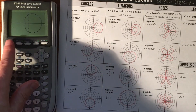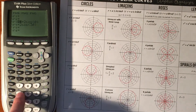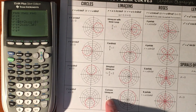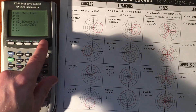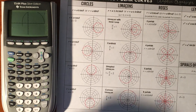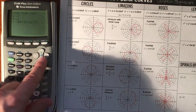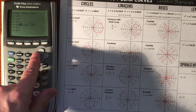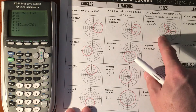If you make A divided by B at least two or bigger, it starts to become more and more of just a circle, and that little dimple piece starts to not happen at all. So that covers the limacons.